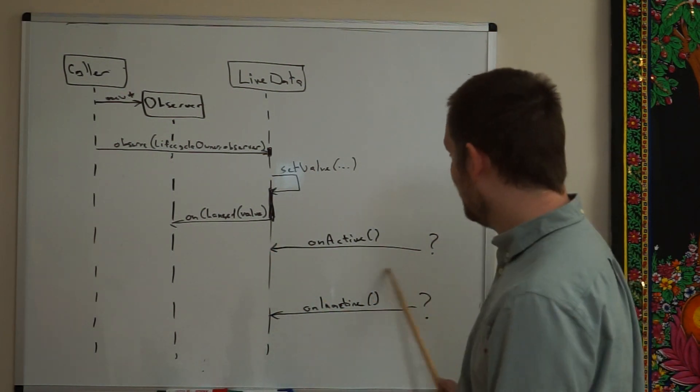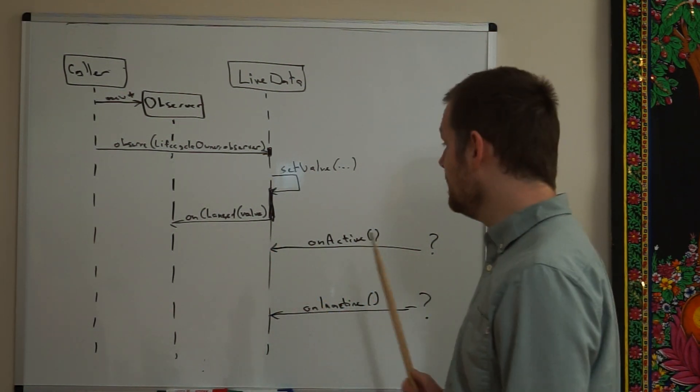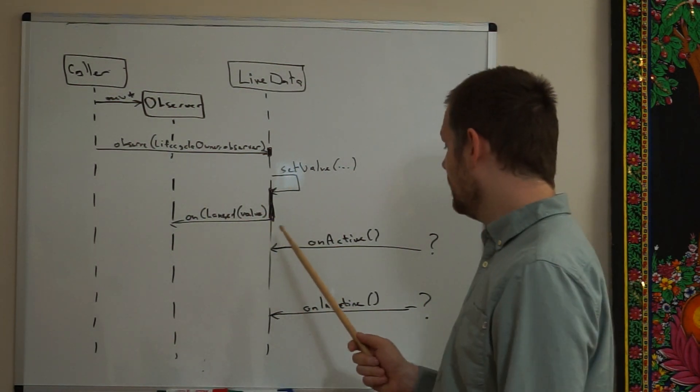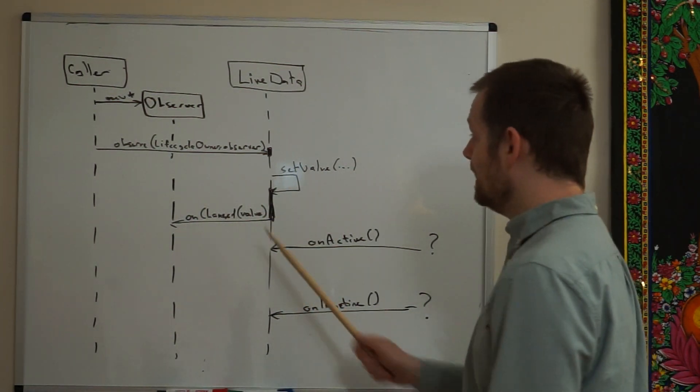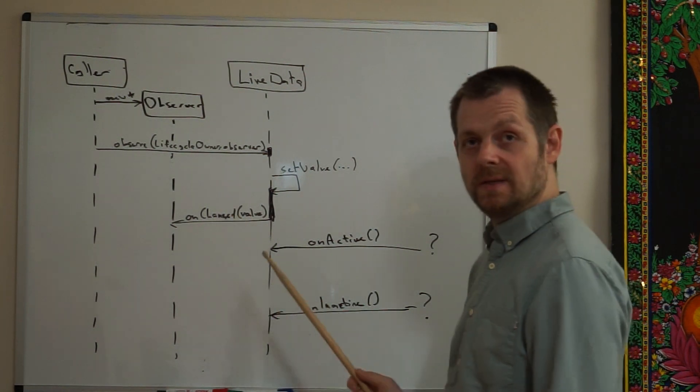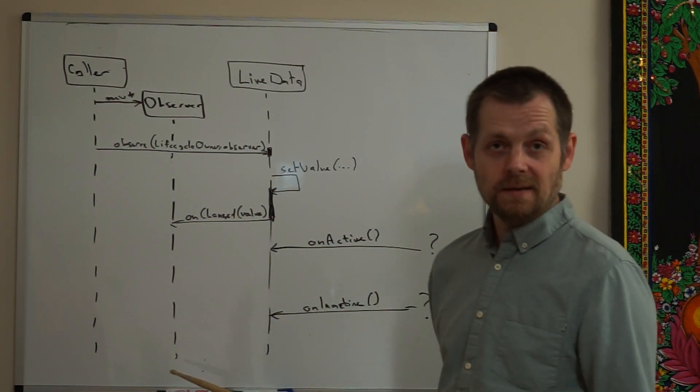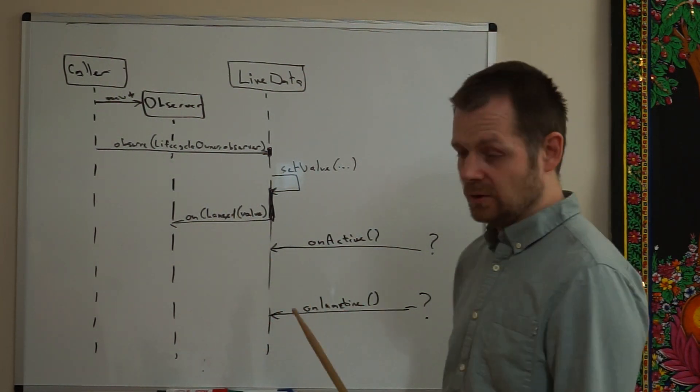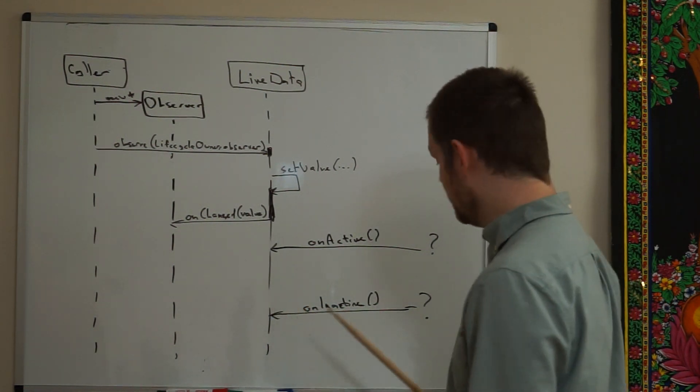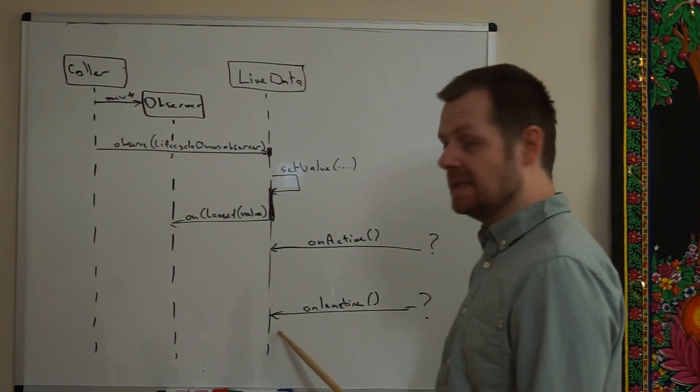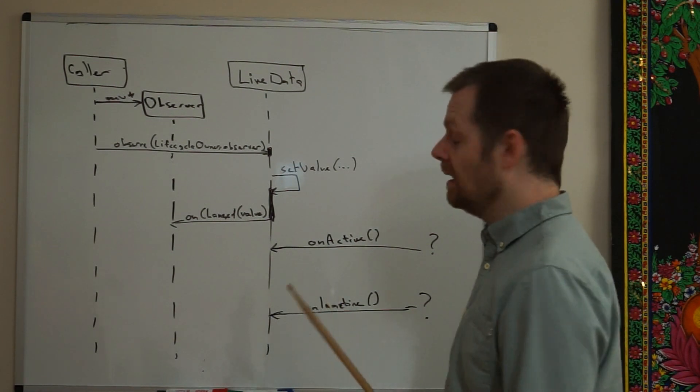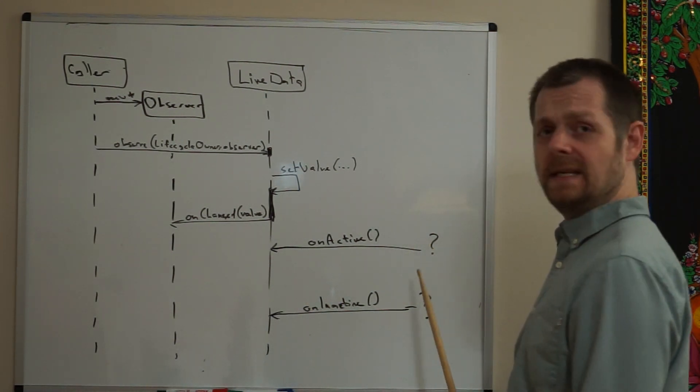This may mean that observers are registered with LiveData but are not active. When the lifecycle owner goes into an inactive state, the transition of paused and stopped, the onInactive callback is invoked on LiveData.